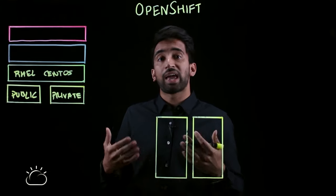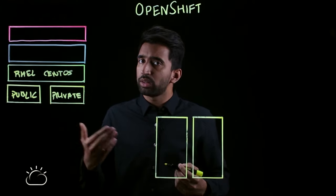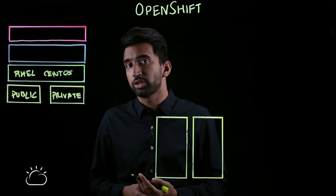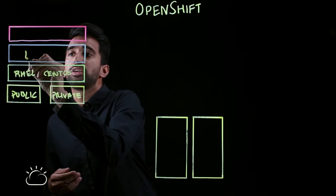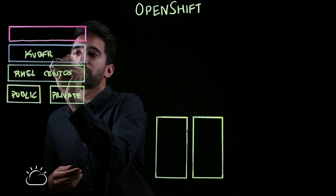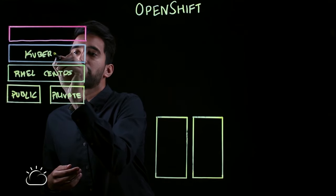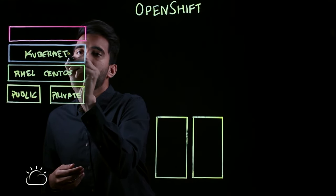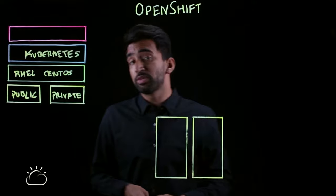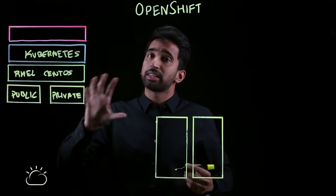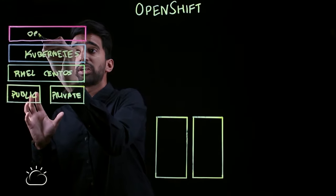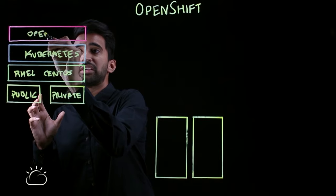On top of that, we're going to have Kubernetes. If you want to learn more about Kubernetes, check out some of the other great videos that we have. We'll have the Kubernetes layer here. Finally, this is where OpenShift really comes in — it's a layer that's built on top of Kubernetes and makes working with it much easier.